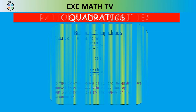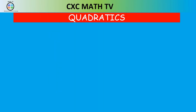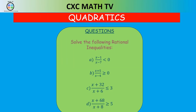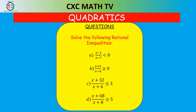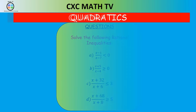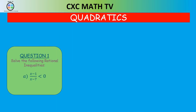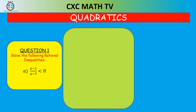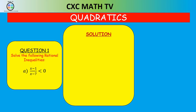Question one: solve the rational inequality X minus one over X minus seven, less than zero. Remember, we need to convert it to a quadratic inequality, so we multiply through by the square of the denominator — in this case, X minus seven, all squared.